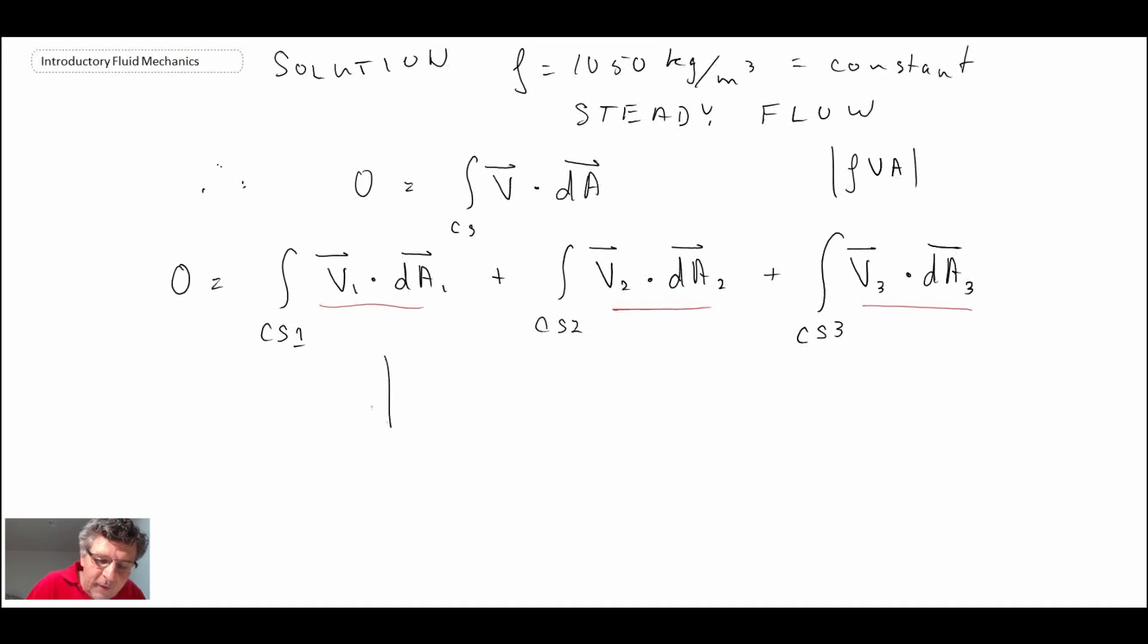So first of all, for control surface 1, the unit vector for the area dA1 would be in that direction, and we were told that the velocity was going in that direction. So this would be a case where we're going to get a negative through the dot product. For control surface 2, this was on the top. Again, the area vector is going to be out in that direction. The velocity was coming down, so again, that's going to be a negative.